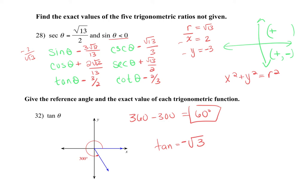You need to know the signs of trig functions in each quadrant: Quadrant I — sine positive, cosine positive, tangent positive. Quadrant II — sine positive, cosine negative, tangent negative. Quadrant III — sine negative, cosine negative, tangent positive. Quadrant IV — sine negative, cosine positive, tangent negative. If you miss those positives and negatives on a test, you lose significant partial credit.